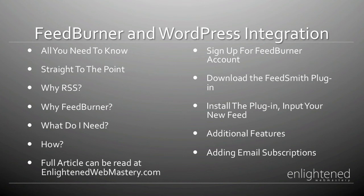How do you integrate WordPress with FeedBurner? You can check out the step-by-step article at enlightenedwebmastery.com, but here's a quick overview. Go to FeedBurner.com and create an account. Then search Google for the FeedSmith plugin — I have the link on my website. Install it by unzipping and uploading it to your WP-Content plugins folder, then activate the plugin. Go to Settings, choose FeedBurner, enter your FeedBurner feed URL, click Save, and it will be working dynamically on your website.